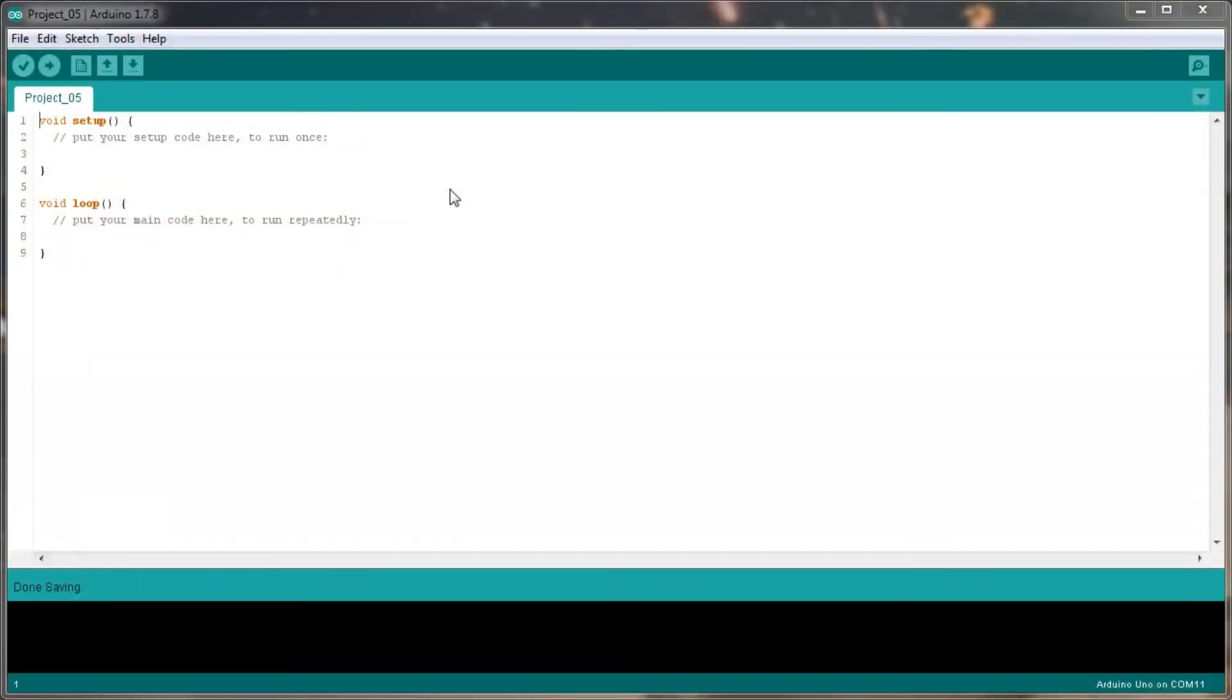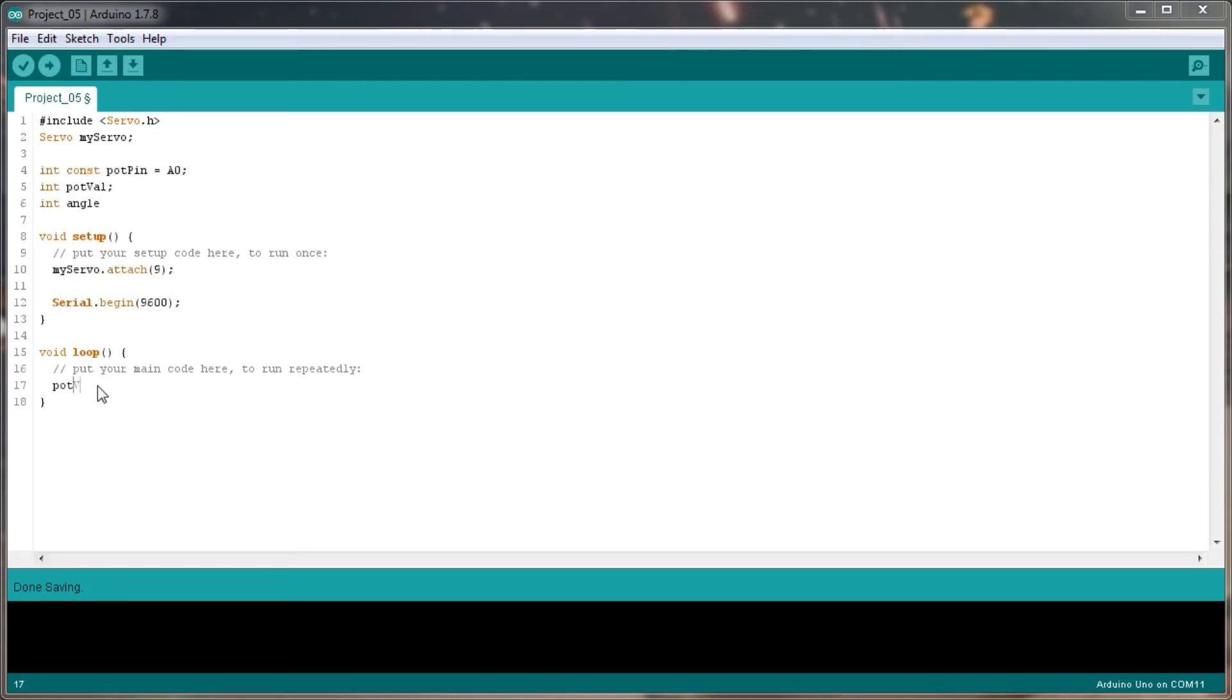Okay, so here we are with a blank canvas for project five code. So the first thing we're going to do, slightly different from the previous projects, is actually do an include here to bring in the actual servo library. So we'll do an include servo dot h, which should include the library. And then we'll name that servo my servo. And then we'll start with the rest of the coding. So I'll just skip over this bit very quickly.